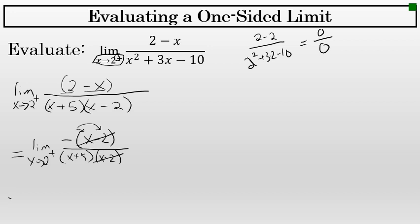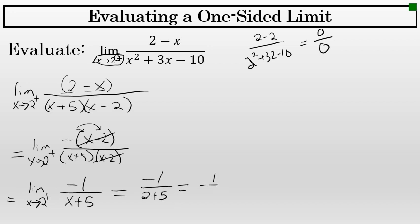A cancellation like this does not change the value of the limit. This is still equal to the limit as x approaches 2 from the right of negative 1 over (x plus 5). Now this limit can be evaluated through direct substitution — substituting 2 for x gives negative 1 over 7, which is the answer to the limit as x approaches 2 from the right.